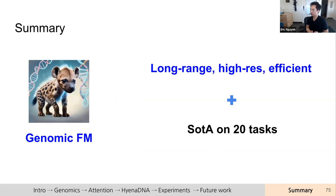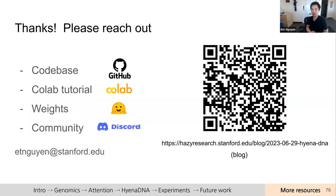In summary, we presented HyenaDNA, a genomic foundation model with long-range capabilities and single nucleotide resolution that shows strong performance on standard benchmarks. We've made a number of artifacts public, including an introduction tutorial showing how to fine-tune a pre-trained model, all model weights, and a Discord community to brainstorm ideas. We'd love to hear feedback on how we might support your problems and challenges.